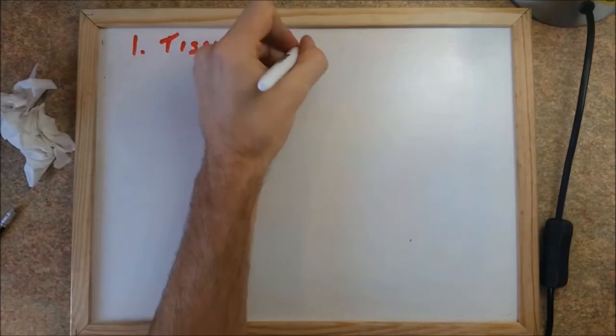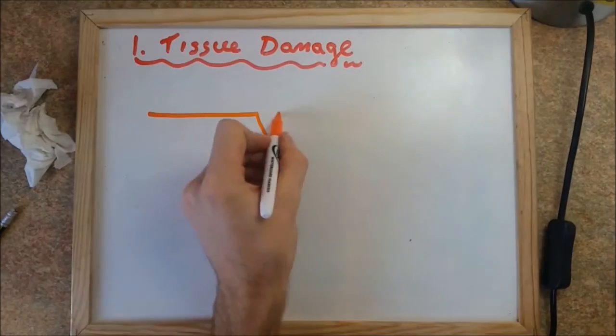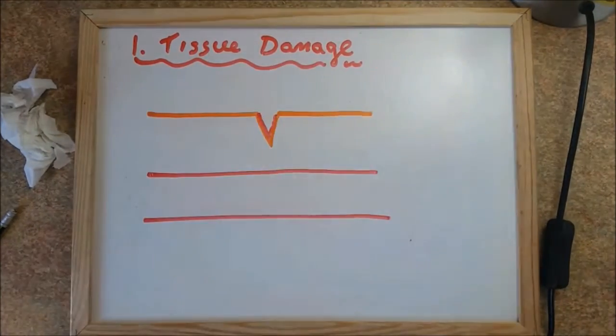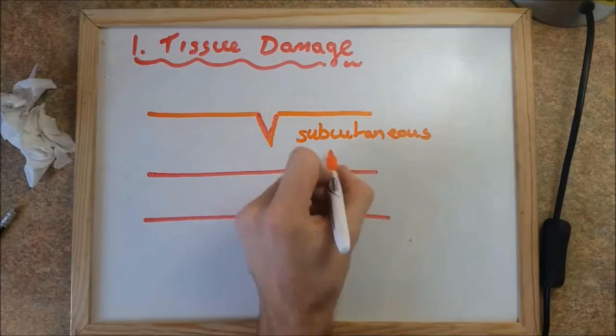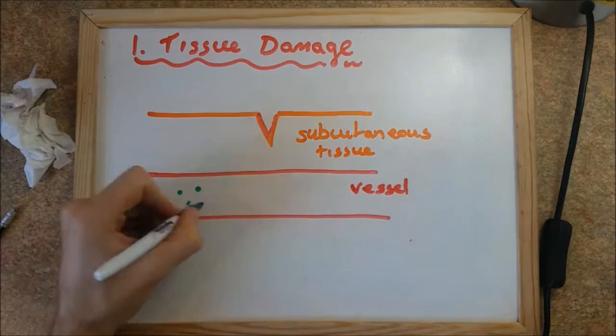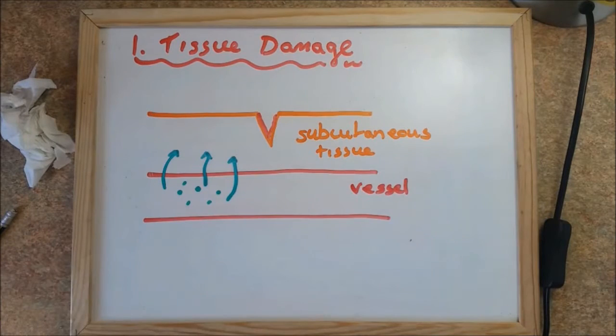The inflammatory response can be subdivided into four main parts. The first is tissue damage. Suppose a virus gains entry through skin damage. This causes the innate immune response to recruit histamines via mast cells.